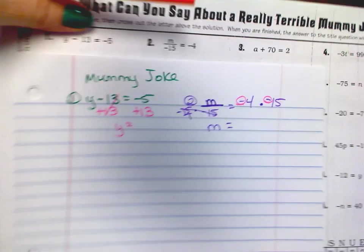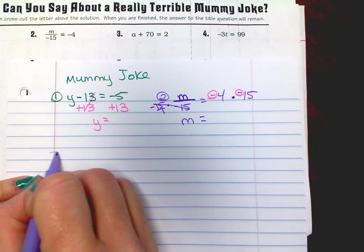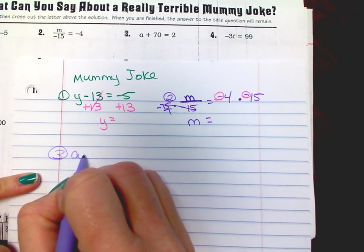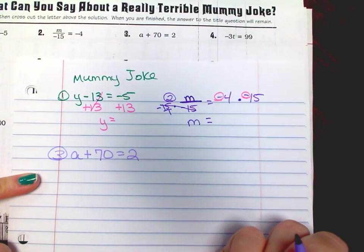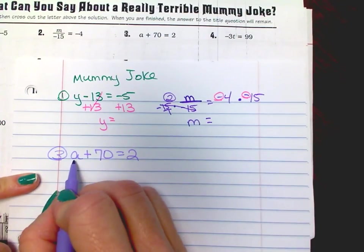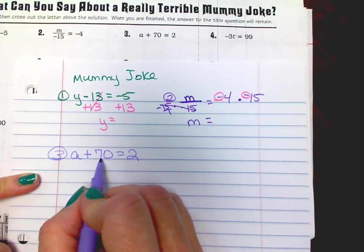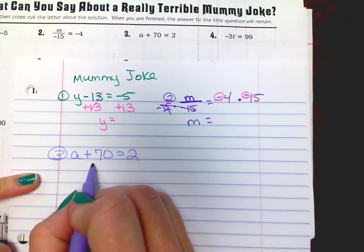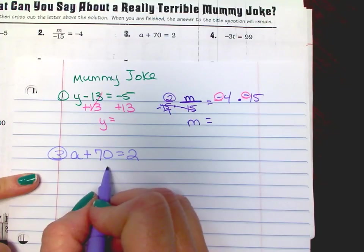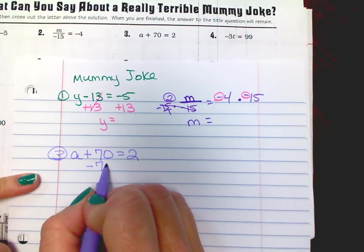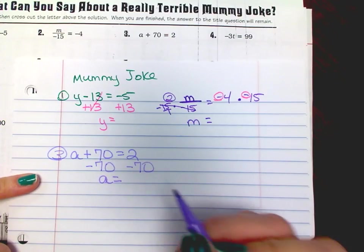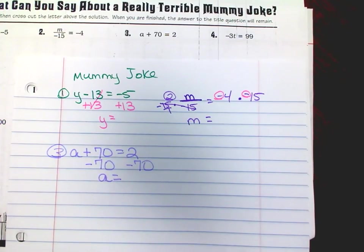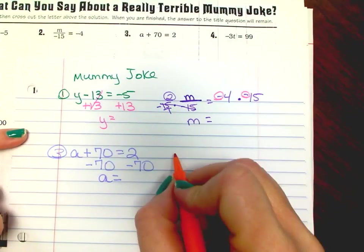Number three. A plus 70 equals 2. I want to get a by itself, so I need to move 70 over. To do that, I have to cancel it out on this side, so you subtract 70 from both sides.